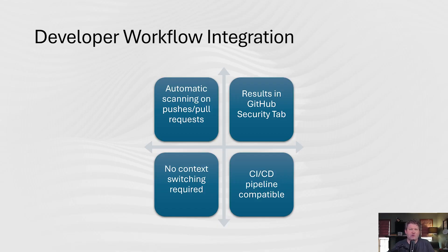Now let's talk about how GHAS actually fits into your daily development workflow, because this integration is what makes it practical to use. Everything can be automated or just happens automatically. Once enabled, code scanning runs on pushes and pull requests without any manual intervention. Secret scanning happens constantly in the background. And dependency review can be configured to run when a pull request is created. The key is that developers don't need to leave GitHub or learn new tools. All alerts appear in the security tab of your repository and are designed to provide actionable information. You can see exactly where the issue is, why it's a problem, and in many cases get suggested fixes from Copilot autofix. For teams using GitHub Actions for CI/CD, GHAS integrates seamlessly into your existing workflows. You can even customize when scans run and how results are handled. For teams that don't use GitHub Actions, there is a CodeQL CLI that you can use to integrate scans into your CI/CD environment.